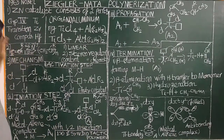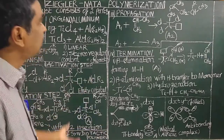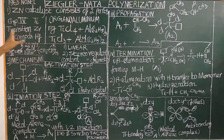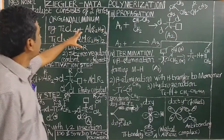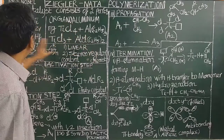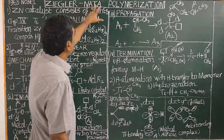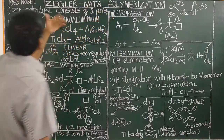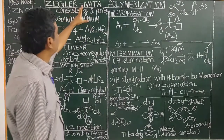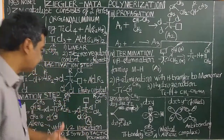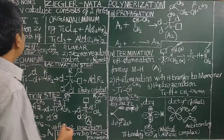Now let us see the mechanism of Ziegler-Natta polymerization. Carl Ziegler, a German chemist, discovered this catalyst and polymerized alkenes and substituted alkenes to form polyalkenes. Later, Giulio Natta found that the polymers produced are stereoregular — for example, isotactic polymers.